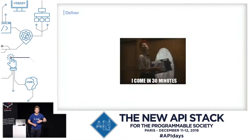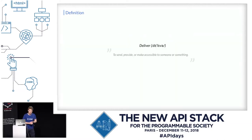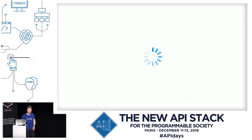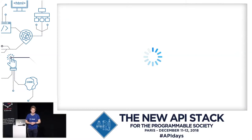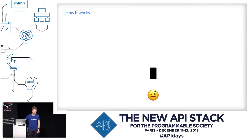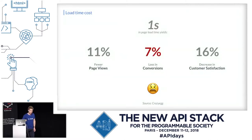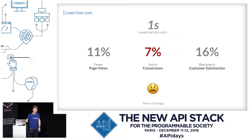When you think about delivery, you will probably think about your pizza delivery that you've been waiting many minutes for. It takes time and it's very boring. The definition of delivery is to send, provide, or make accessible to someone or something. And when it comes to web, the delivery looks sometimes like a loader taking time because you are the user waiting for the web page. Everything about web is about delivery to the user. This is very important because one second page load yields 11% fewer page views, 7% loss in conversions, and 16% decrease in customer satisfaction.